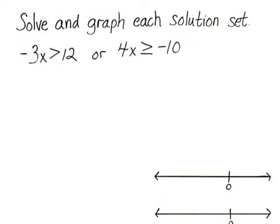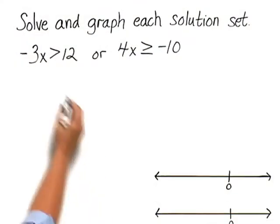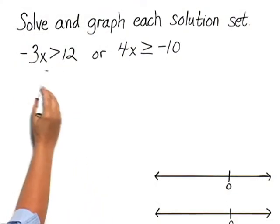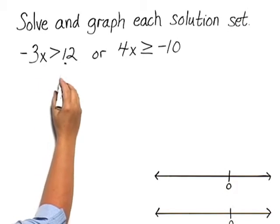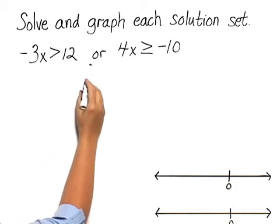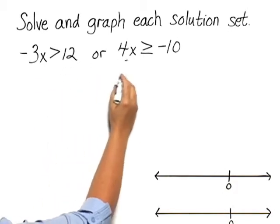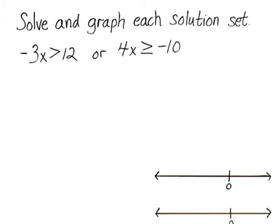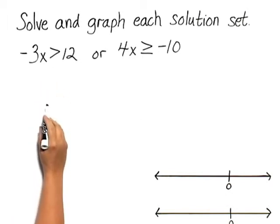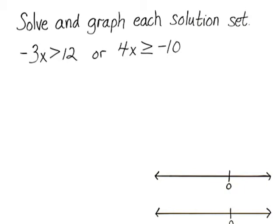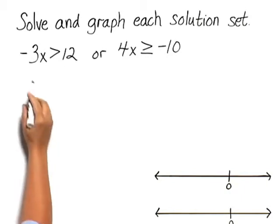Solve and graph each solution set. We have the inequality negative 3x is greater than 12, or 4x is greater than negative 10. Let's solve each part separately, and then we'll look to see what the solution of the compound inequality would be.